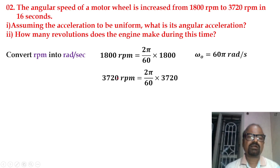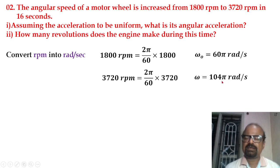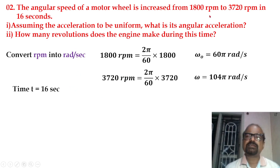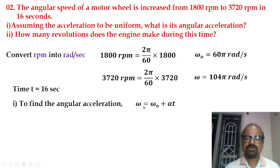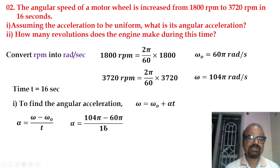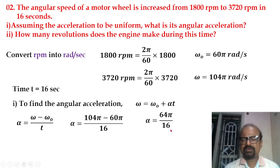The final velocity is 3720 RPM, converted to 104.5 radian per second. Time is 16 seconds. Using the equation omega = omega₀ + alpha·t, alpha equals (omega minus omega₀) divided by t. The value is (104.5 minus 65) divided by 16, giving alpha equal to 64.5 divided by 16, so alpha equals 4.5 radian per second squared.